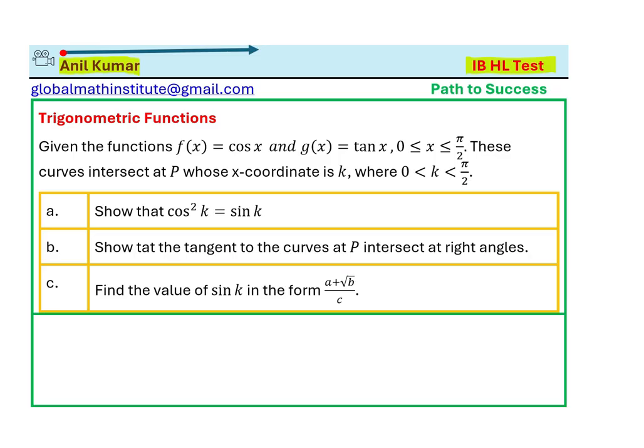Part b is show that the tangent to the curves at P intersects at right angles. Find the value of sin k in the form (a + √b)/c. Now let's see step by step how we solve such equations.